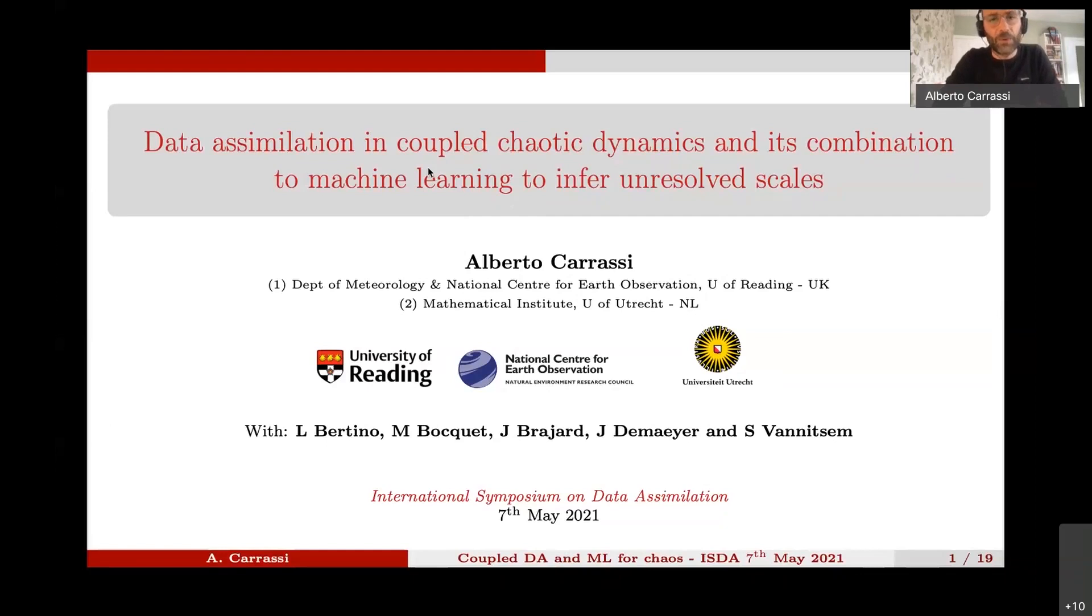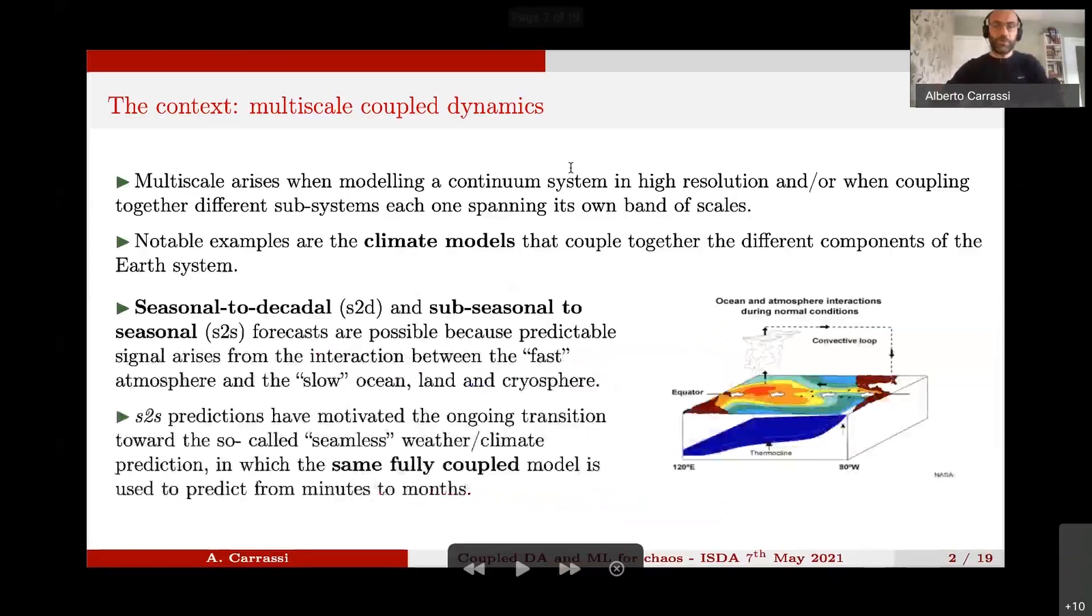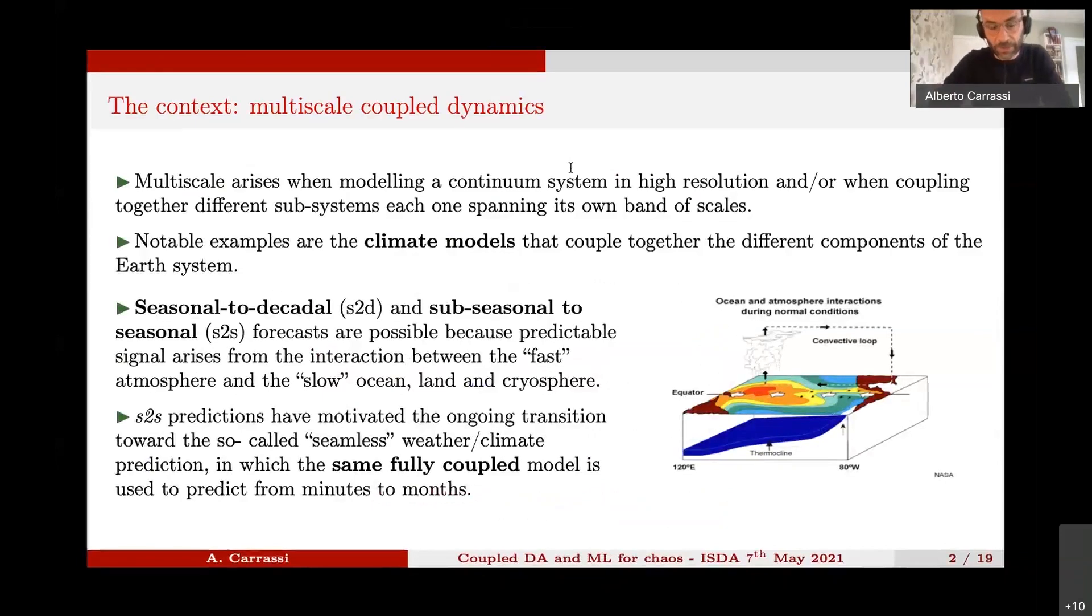The second part of the talk, I will mention about a combination of data assimilation and machine learning to devise a sub-scale parametrization whereby, again, the use of ensemble Kalman filter and coupled mode was pivotal. So, this is a bit of the context, which I think is a bit redundant given the context here. And I'm sure that all of you know already, but just to remind that the problem of multiscale arises when modeling in general, a continuous system at finite resolution or, as is the case in climate science, where we couple together different subsystems.